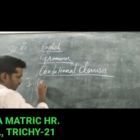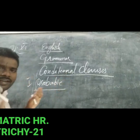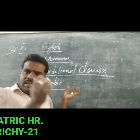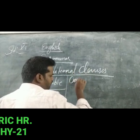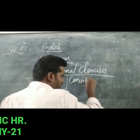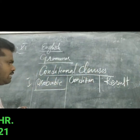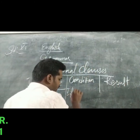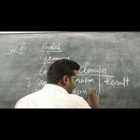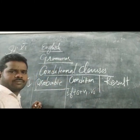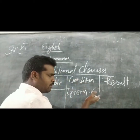This is the first type — probable condition. What is probable? We have already learned this. We are revising it. There is a condition part and a result part. The condition part is: if clause, subject plus V1 — or V plus 's' for third person singular subjects.